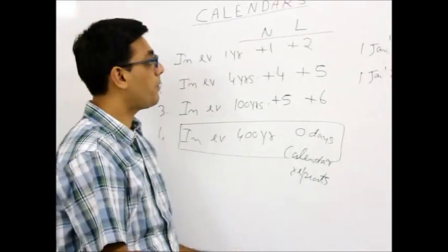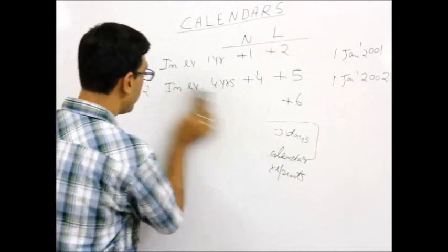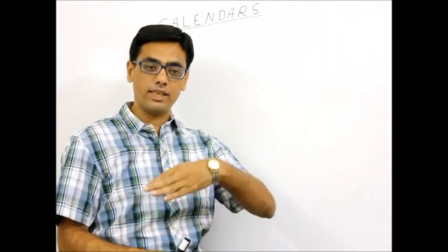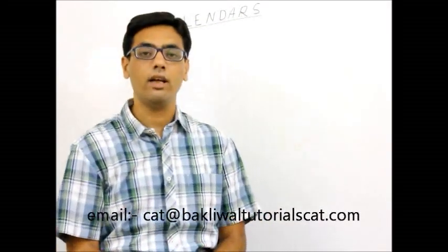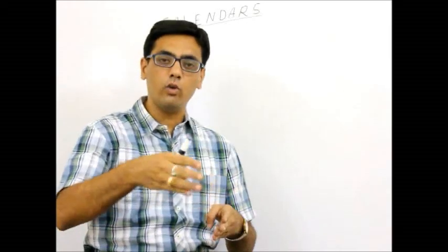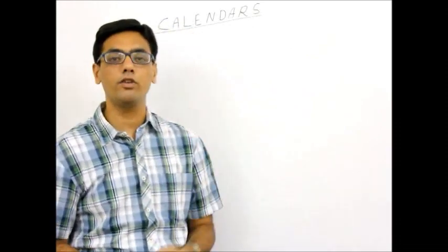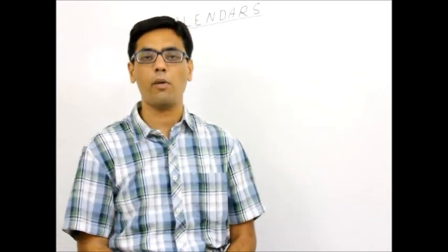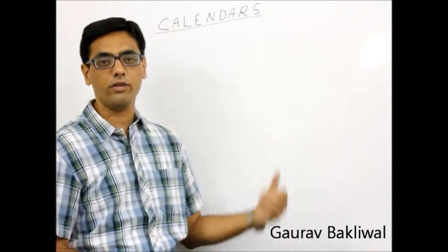This covers calendar questions across years. The second part of calendar — not frequently asked — involves questions within the same year. For example: if 26th January 1950 was Sunday, what will be 15th August 1950? You need to count the days of each month in that year and keep adding them, then divide by 7 to find the remainder. Apply the remainder technique: find the remainder of each month's count first, then add the remainders together for a faster solution.